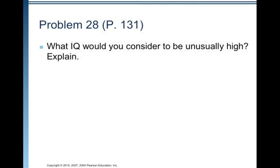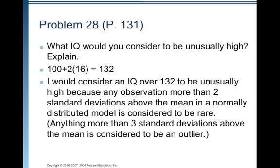Problem 28 asks us, what IQ would you consider to be unusually high? And they want us to explain. Well, what I would do is I'd figure out or look back at my model and see, since it says high and it's unusually high, what IQ score marks off being two standard deviations above the mean.